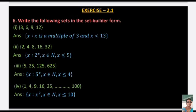Question 6: Write the following sets in set builder form. First: {3, 6, 9, 12} — these are multiples of 3 less than 13, so x such that x is a multiple of 3 and x < 13. Next: {2, 4, 8, 16, 32} — these are powers of 2, so x such that x = 2^n where n ∈ N and n ≤ 5.